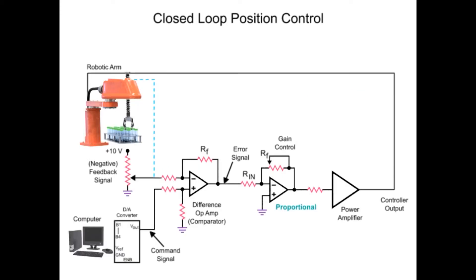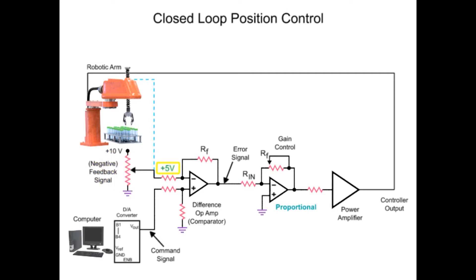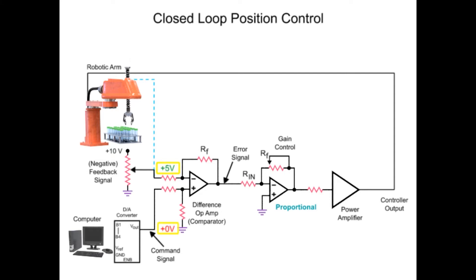The potentiometer attached to the robotic arm in the circuit indicates the actual position. The variable voltage produced is referred to as the feedback signal. When the feedback signal voltage matches the command signal voltage, the arm has reached the desired position.